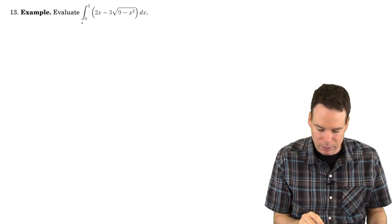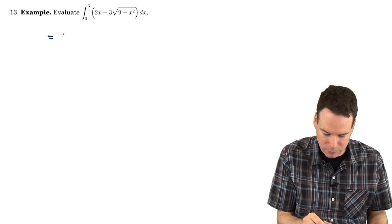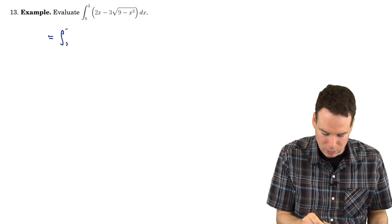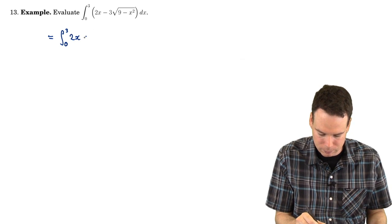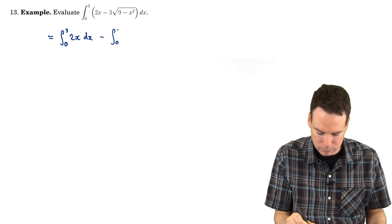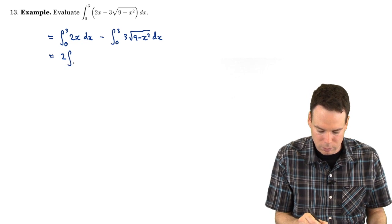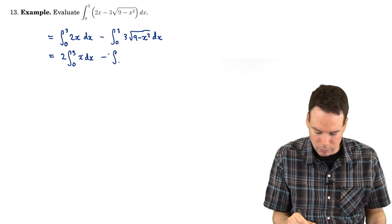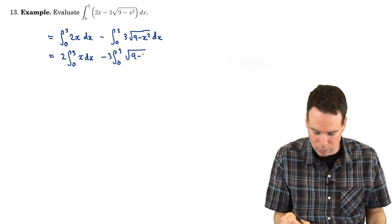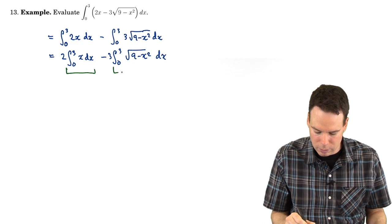Let's evaluate the integral from 0 to 3 of this function. We're going to use some properties to simplify this. First, we can write it as the difference of two integrals, and then bring constants out front. So we get 3 times the integral from 0 to 3 of the square root of 9 minus x squared dx, and we focus attention on each of those integrals.